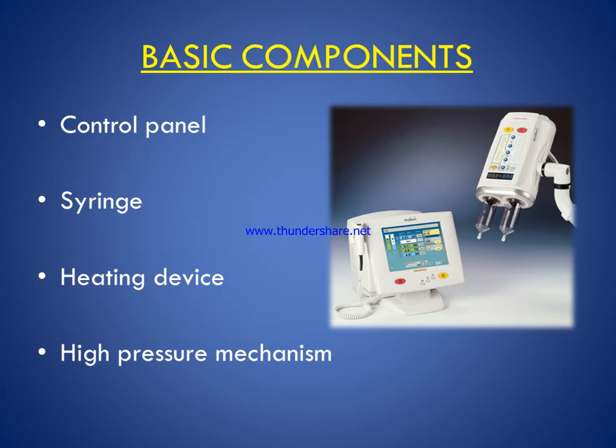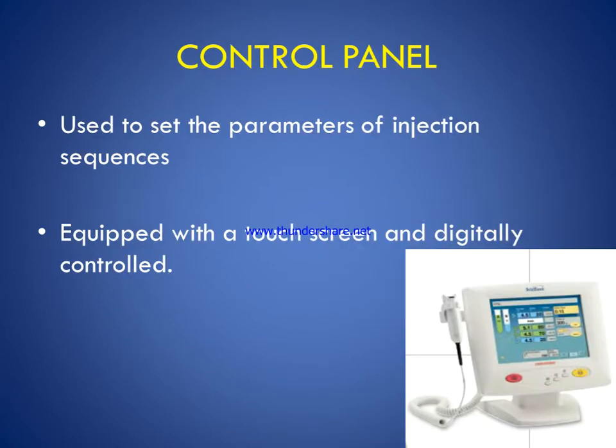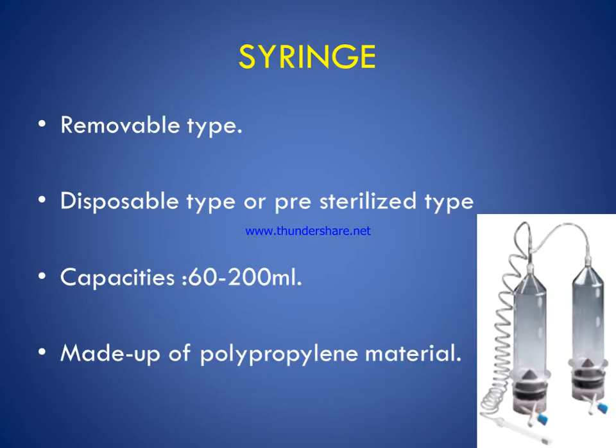The basic components of the pressure injector include the control panel, syringe, heating devices, and high pressure mechanism. The control panel is used to set the parameters of the injection sequences and is equipped with a touchscreen and is digitally controlled. The syringe is a removable, disposable, or pre-sterilized type.